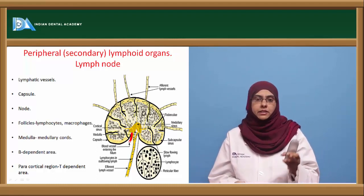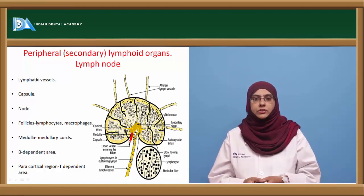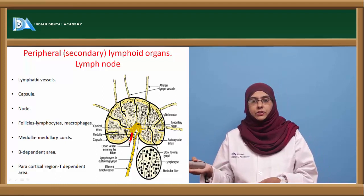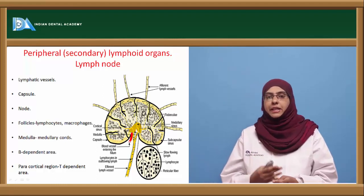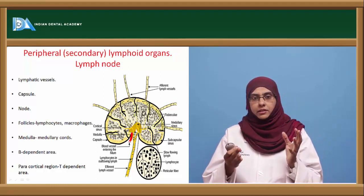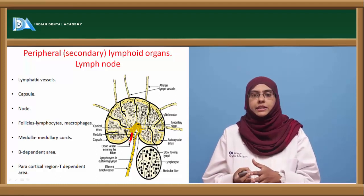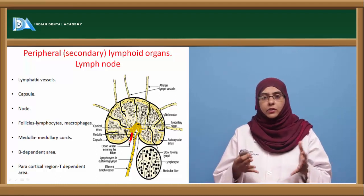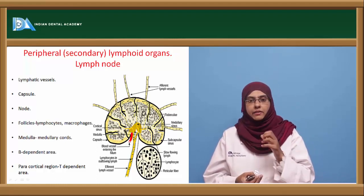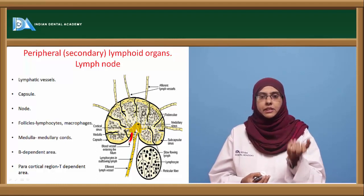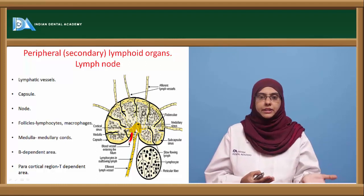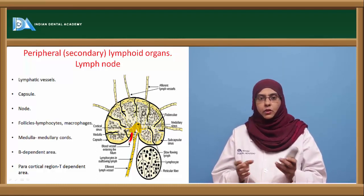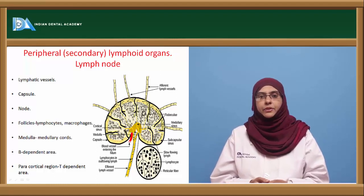Secondary lymphoid organs can be classified as organized ones — such as Peyer's patches, spleen, and lymph nodes — and scattered ones, mostly mucosal-associated lymphoid tissue. Lymph nodes are formed at junctions of lymphatic vessels. When an antigen enters the body, it is captured in the lymphatic vessels and brought to the lymph node where immunocompetent lymphocytes can interact with it and mount an immune response.